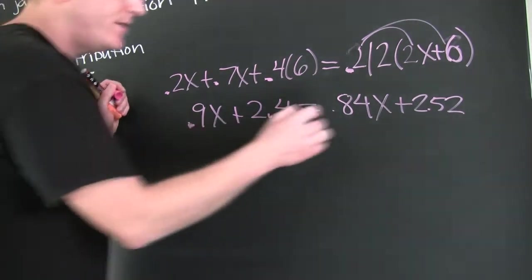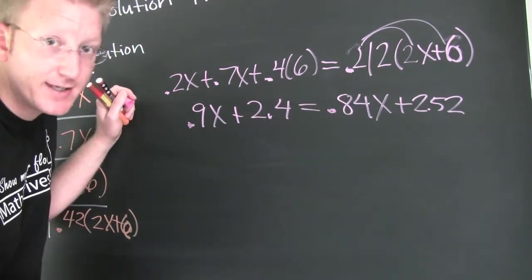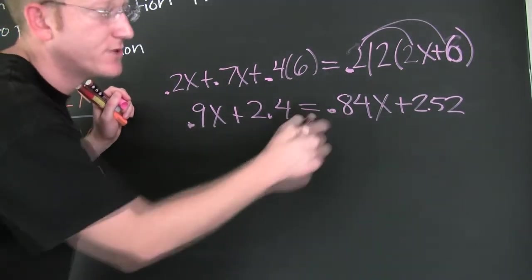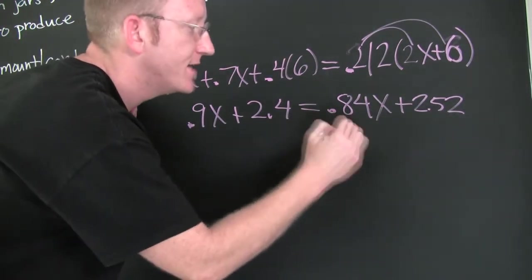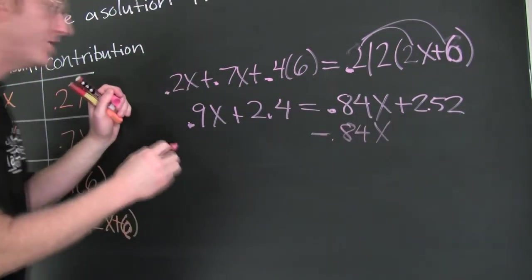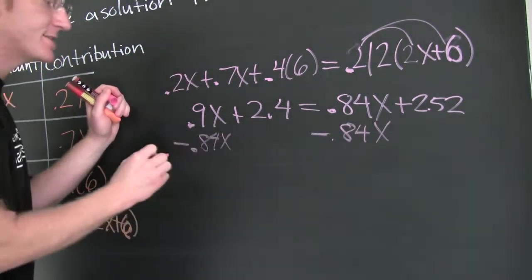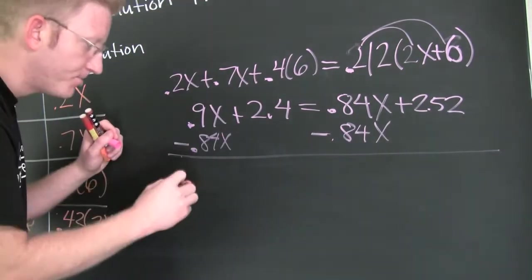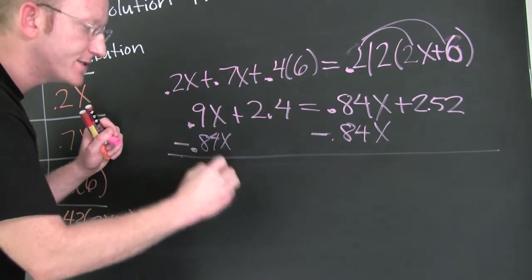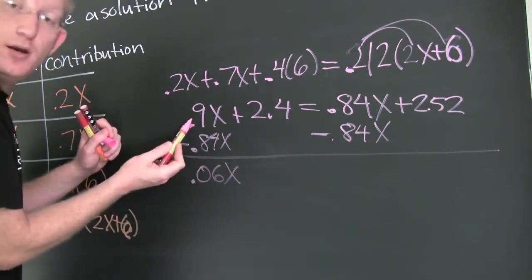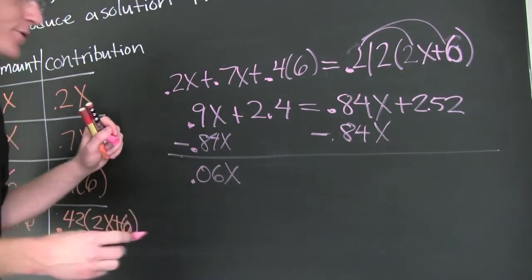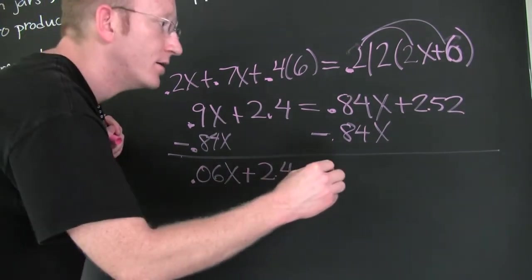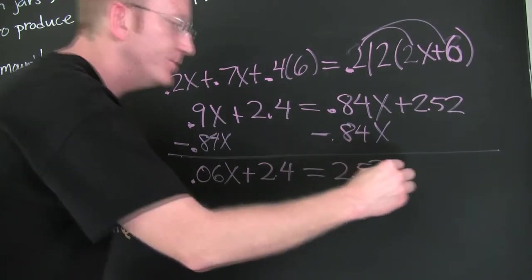Here I have X's on one side. No. I got X's on both sides. I want them on one side. Which side? Don't care. You want them to the left? Why do you want them over there? Because your 9's bigger, sure. So I'm going to go and I'm going to subtract off a 0.84X. What you do on the one side, you must also do on the other. 0.84X. Very nice. And then the difference is 0.06X. And then that's going to be positive because the 0.9 is bigger than the 0.8. Great. And I'm still going to have 2.4 added to that. And then that's going to equal 2.52.